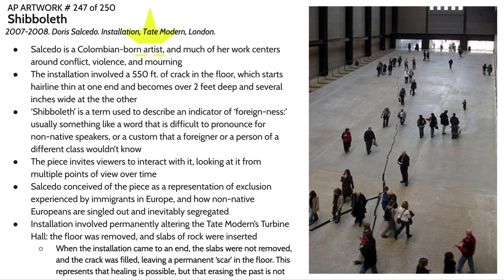A lot of students struggle with this work due to its conceptual nature. One of the things that helps inform us of its purpose is the commentary the artist has provided, as well as the title 'Shibboleth.' A shibboleth is a term used to describe an indicator of foreignness. Especially with members of immigrant communities, there is this distance between immigrant communities and the more established local communities — foreignness that presents in the way immigrant communities wear things or pronounce certain words, basically an indicator of foreignness that creates distance between communities occupying the same geographic area.